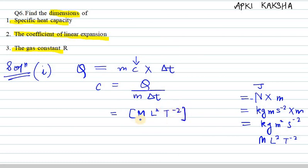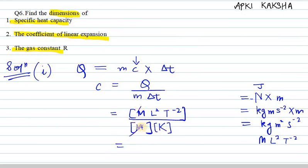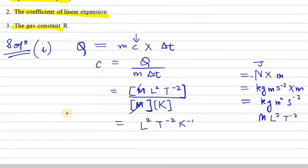So c = ML²T⁻² over mass m and delta (change in temperature), which can be written as K (kelvin). M and m cancel out, and we are left with L²T⁻²K⁻¹. So this is the dimension of specific heat capacity.